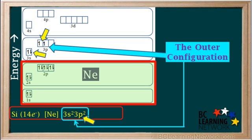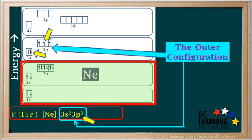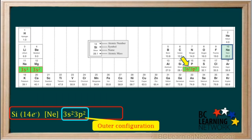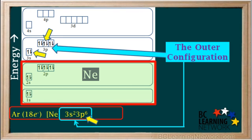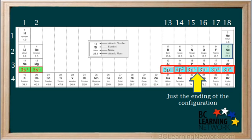You can see that if we wrote the noble gas core configuration for the next element, silicon, with 14 electrons, its outer configuration would be 3s2, 3p2. And the next element, phosphorus, with 15 electrons, has an outer configuration of 3s2, 3p3. Skipping ahead to argon with 18 electrons, its outer configuration is 3s2, 3p6 — notice it has a full set of 3s and 3p orbitals. We write each element's outer configuration under its symbol on the periodic table. Notice they go from 3p1 consecutively up to 3p6.